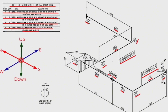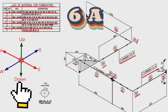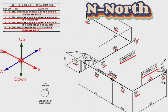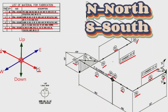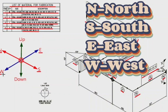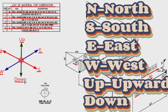Every pipe drawing has such a sketch — this indicates the directions. By studying these directions, we can easily read the pipe isometry. There are six directions here: N means north, S means south, E means east, W means west, Up means up, and Down means down.